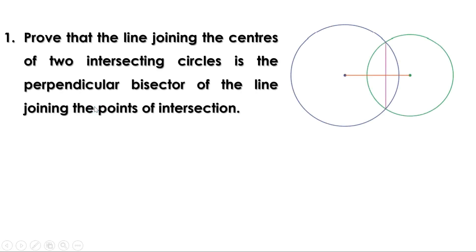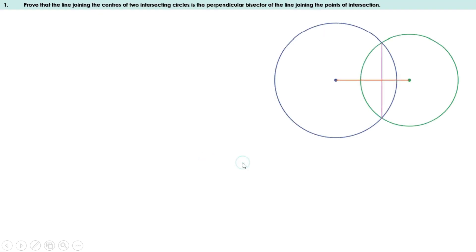Now let us do some problems on page 68. Prove that the line joining the centers of two intersecting circles is the perpendicular bisector of the line joining the points of intersection. Let us give names: let the centers be A and B, the intersecting points of the circles be P and Q, and let the two lines intersect at M. We have to prove that AB is the perpendicular bisector of PQ.